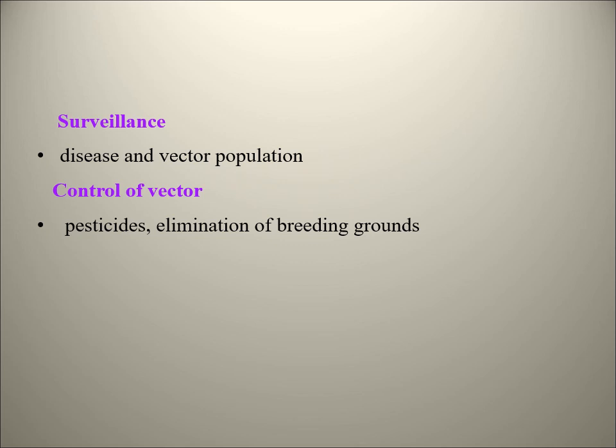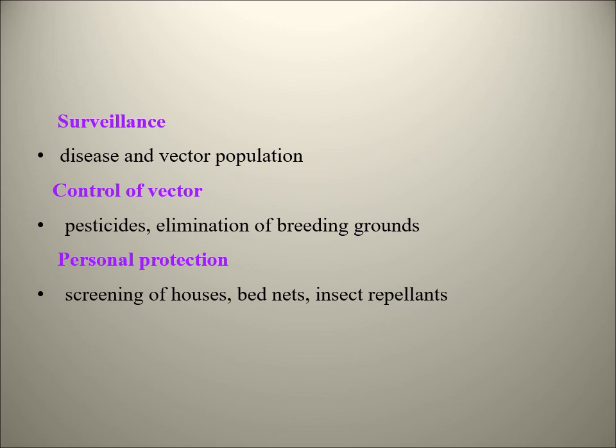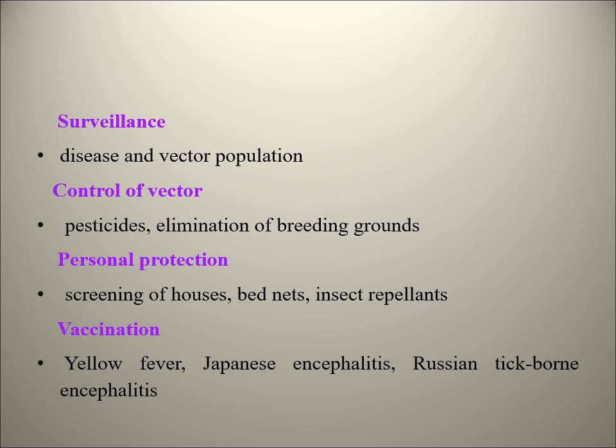Control of arbovirus infections: first is proper surveillance - knowing disease burden, which vector is involved, and how to control the vector population. For mosquito control: use pesticides, eliminate breeding grounds. For personal protection: screening of houses, bed nets, insect repellents. Vaccination is available for certain diseases, and we can use vaccines to prevent those infections.